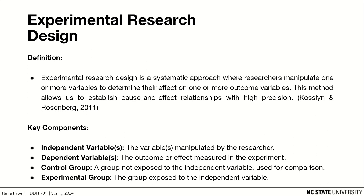Third, error variance — also known as random error — accounts for variability in outcomes that cannot be attributed to either the independent variable or extraneous factors. It represents noise in the data that arises from chance fluctuations or measurement errors. For instance, in a reaction time task, random factors like momentary distractions or inconsistencies in measurement equipment can contribute to error variance. A good research design will maximize experimental variance and control extraneous variance while minimizing error variance.